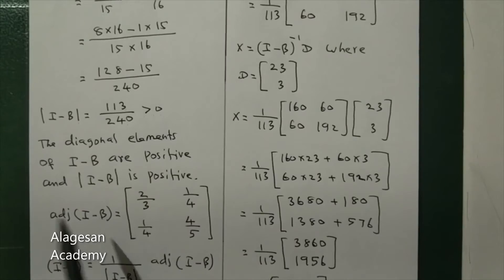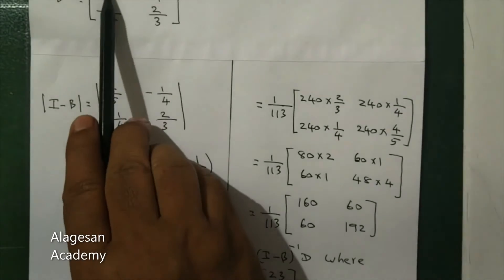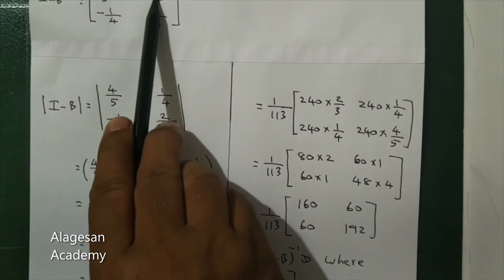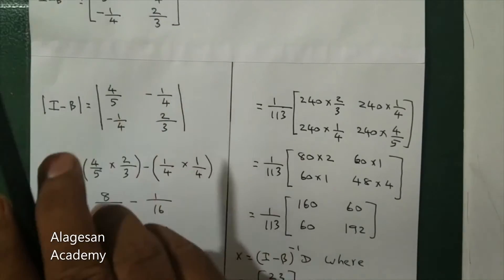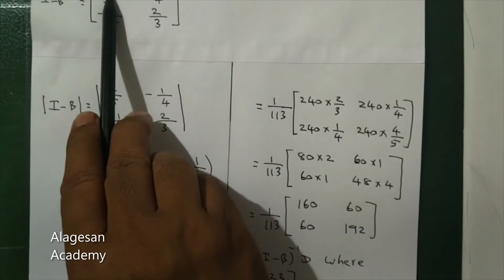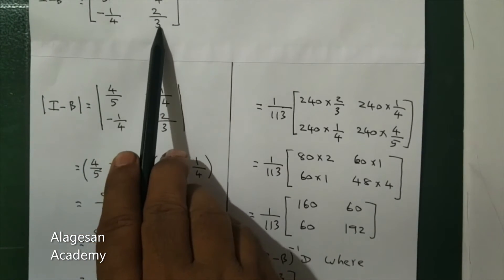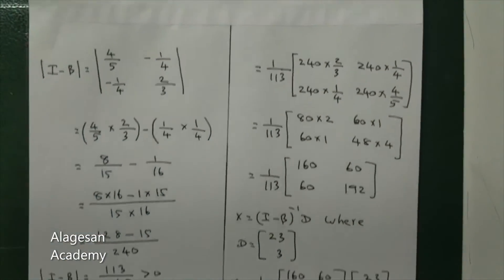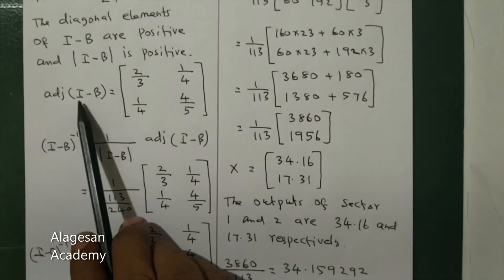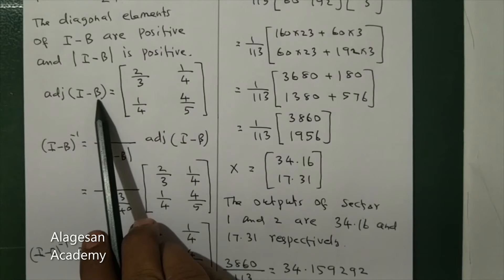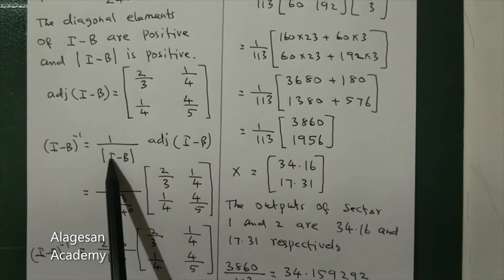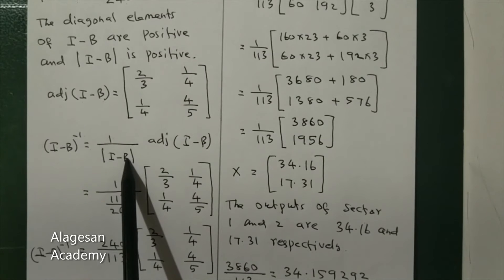Next, find the adjoint of (I - B). For a 2×2 matrix, swap the diagonal elements and change the sign of the off-diagonal elements. The adjoint of (I - B) is [[2/3, 1/4], [1/4, 4/5]]. Then, (I - B)^(-1) = (1 / det(I - B)) × adjoint(I - B) = (240/113) × adjoint(I - B).